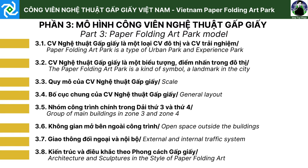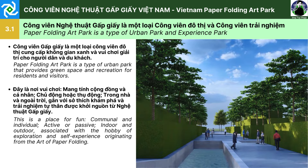Phần 3. Mô hình công viên nghệ thuật gấp giấy, gồm có 8 nội dung chính. 3.1. Công viên nghệ thuật gấp giấy là một loại công viên đô thị và công viên trải nghiệm. Công viên nghệ thuật gấp giấy cung cấp không gian xanh và vui chơi giải trí cho người dân và du khách. Đây là nơi vui chơi mang tính cộng đồng và cá nhân, chủ động hoặc thụ động trong nhà và ngoài trời, gắn với sở thích khám phá và trải nghiệm tự thân được khởi nguồn từ nghệ thuật gấp giấy.